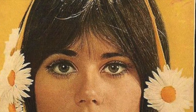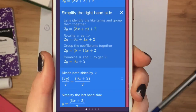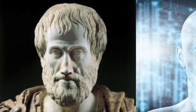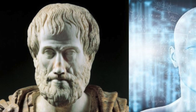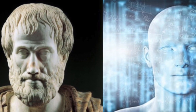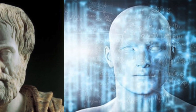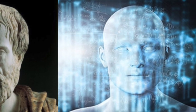By 1965, programs existed that could, in principle, solve any solvable problem described in logical notation — although, if no solution exists, the program might loop forever. The so-called logicist tradition within artificial intelligence hopes to build on such programs to create intelligent systems.